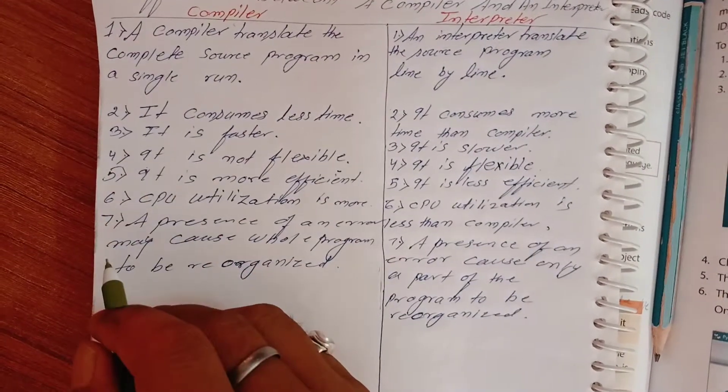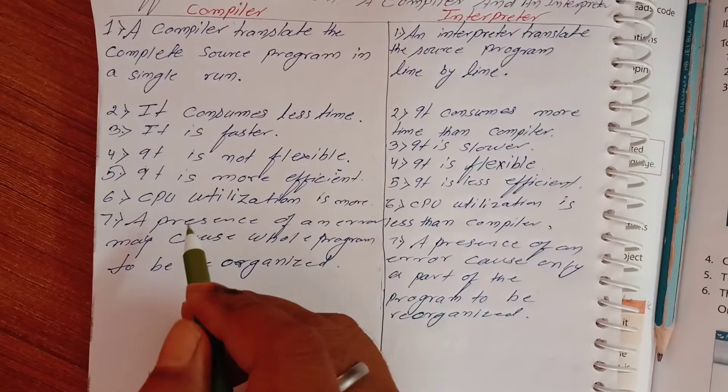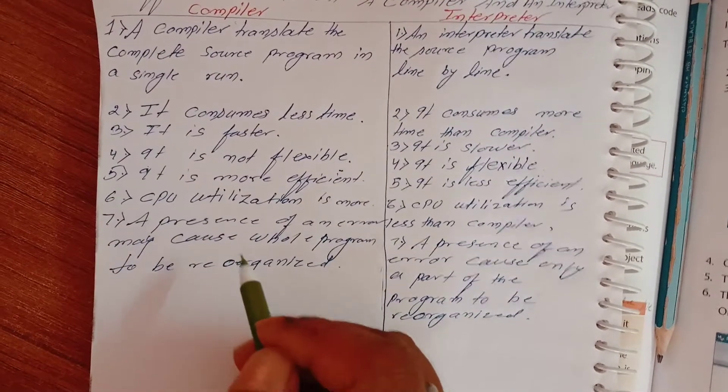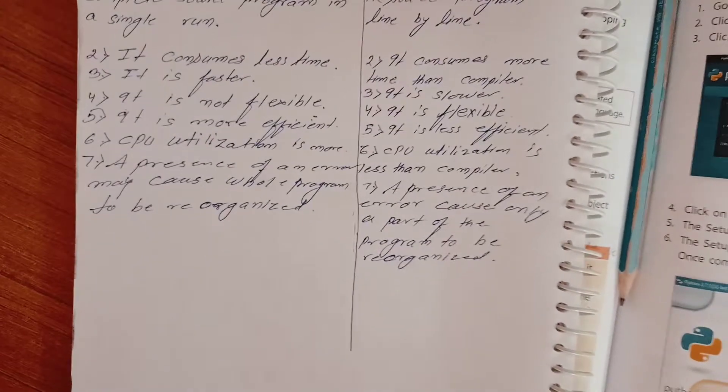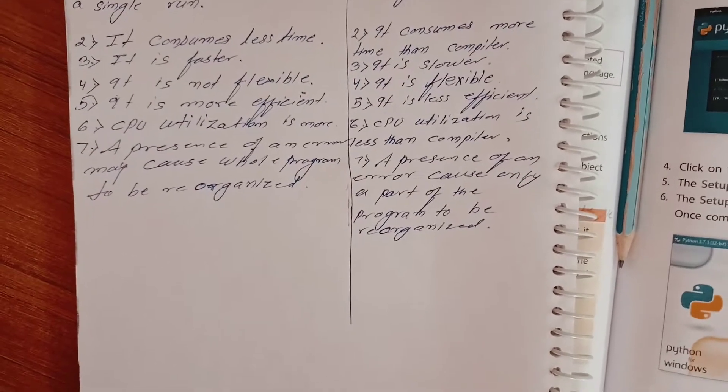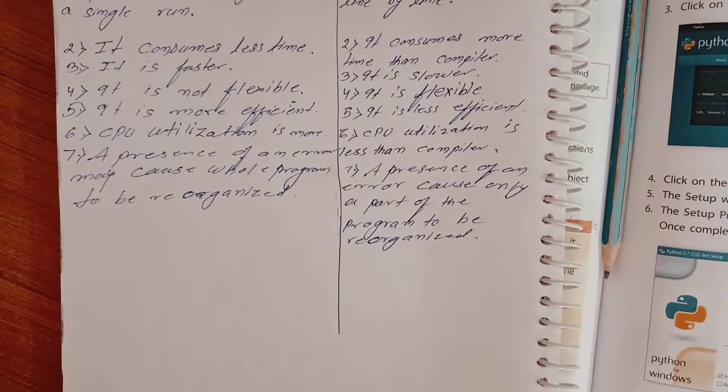Next point: compiler takes less time. In compiler, it can complete source program in a single run, then it checks the complete program, not line by line, then at last if there is any problem it creates errors.